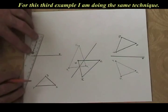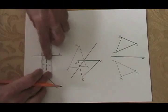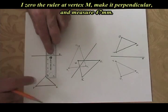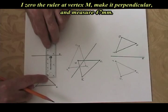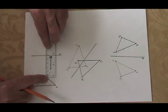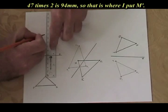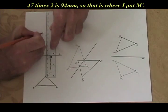In this bottom one, I'm doing the same technique. I zero my ruler at M, vertex M. I think that is 47 millimeters. I double it to 94. Put a dot. That's my M'.